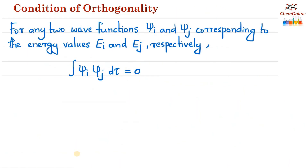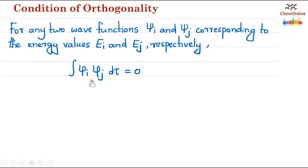Now let's see the orthogonality of wave functions. Consider two wave functions ψᵢ and ψⱼ corresponding to energy values Eᵢ and Eⱼ respectively. If ∫ψᵢ · ψⱼ dτ = 0, then the two functions are said to be orthogonal. This is the condition of orthogonality. We saw the normalization condition: ∫ψ₁ · ψ₂ dτ = 1.